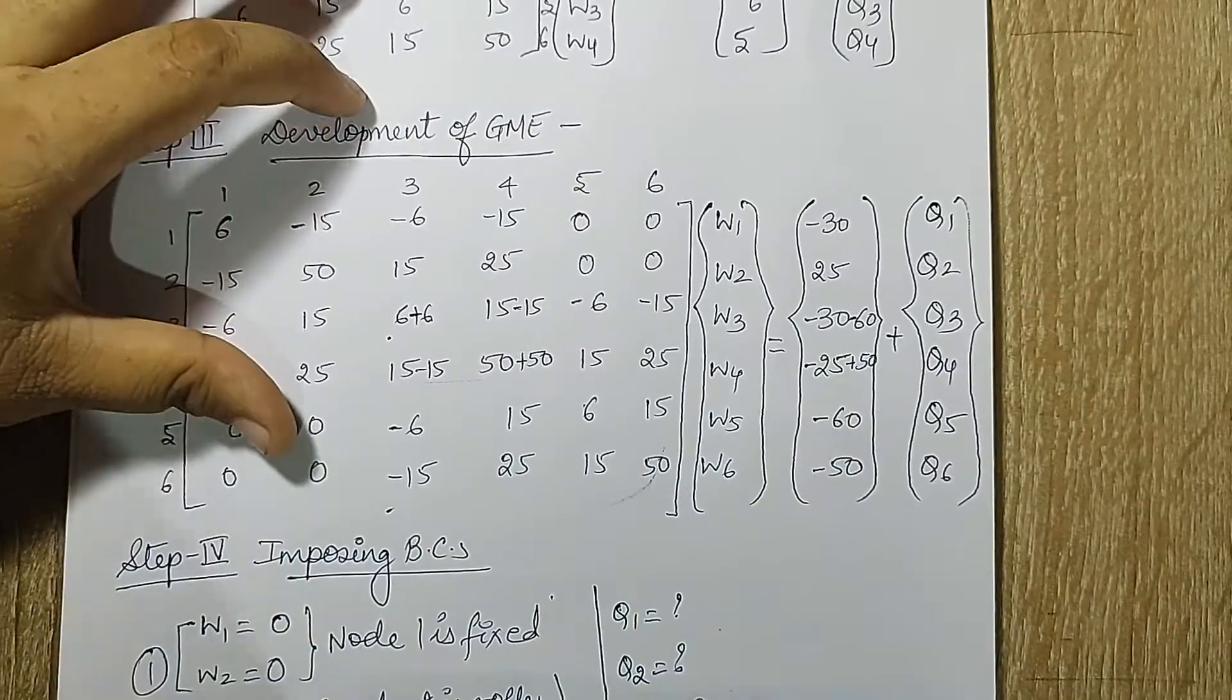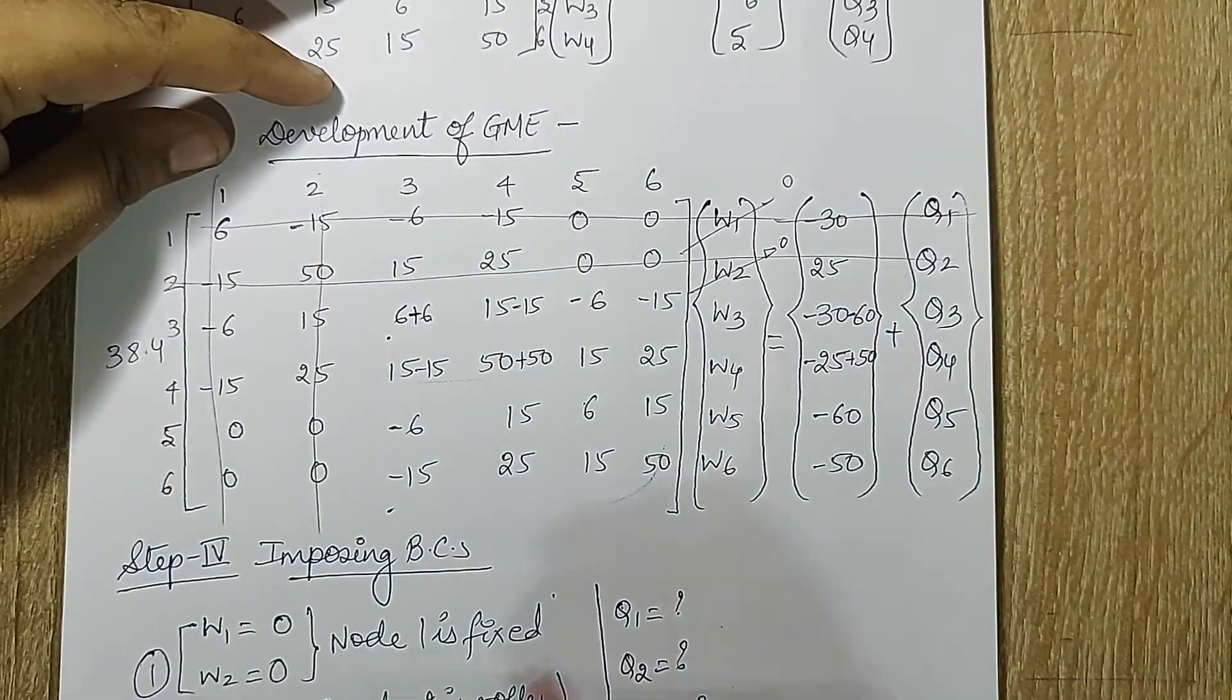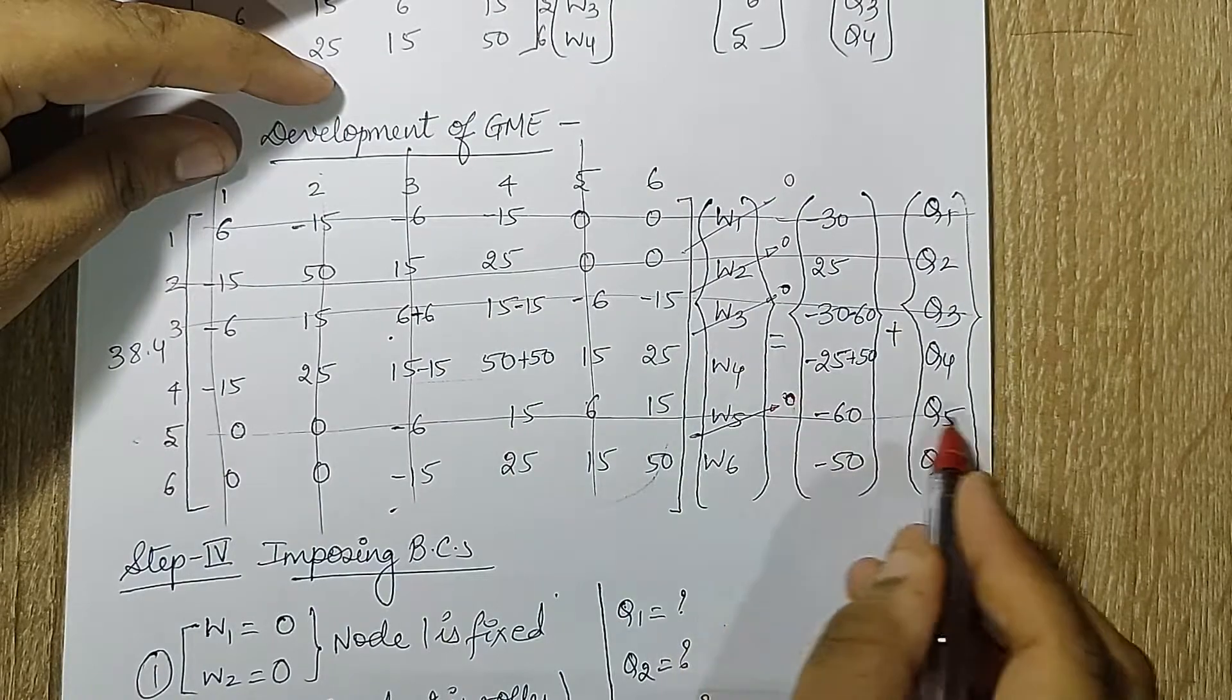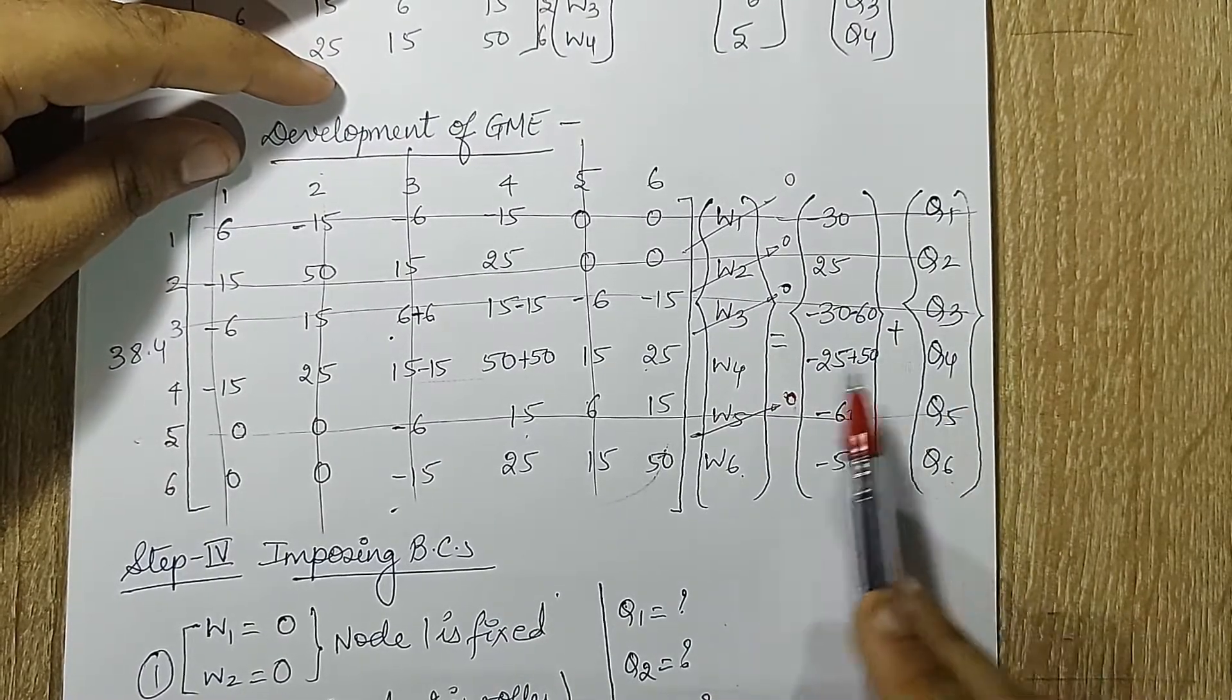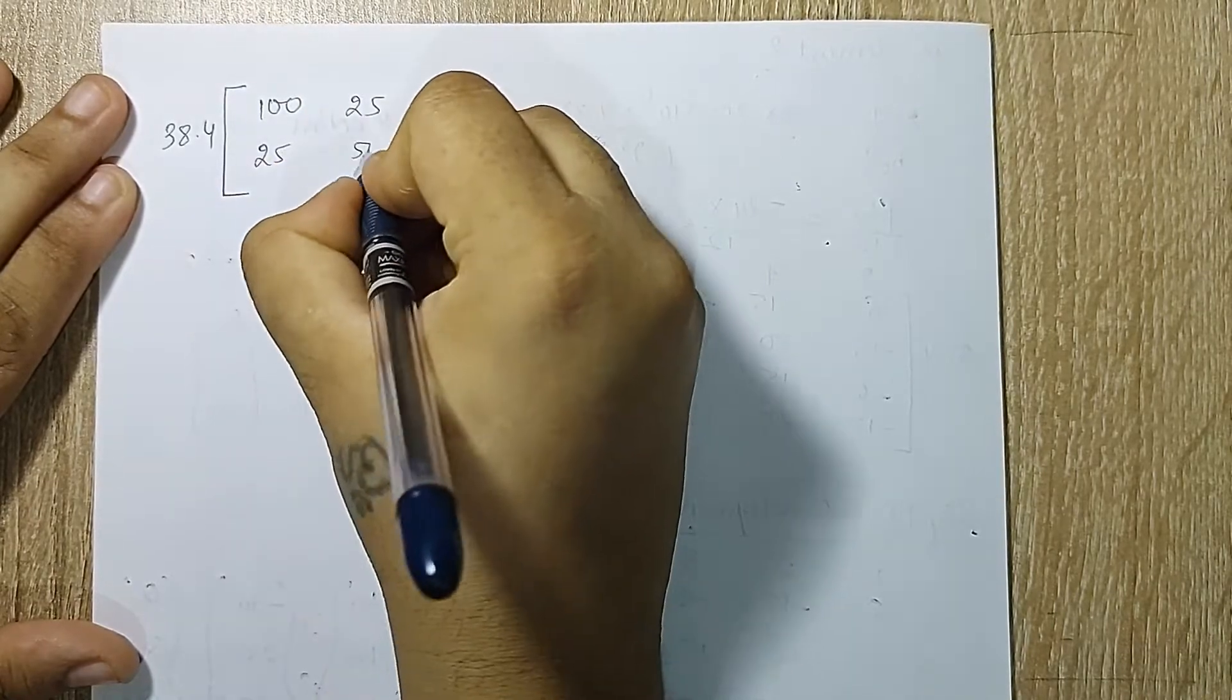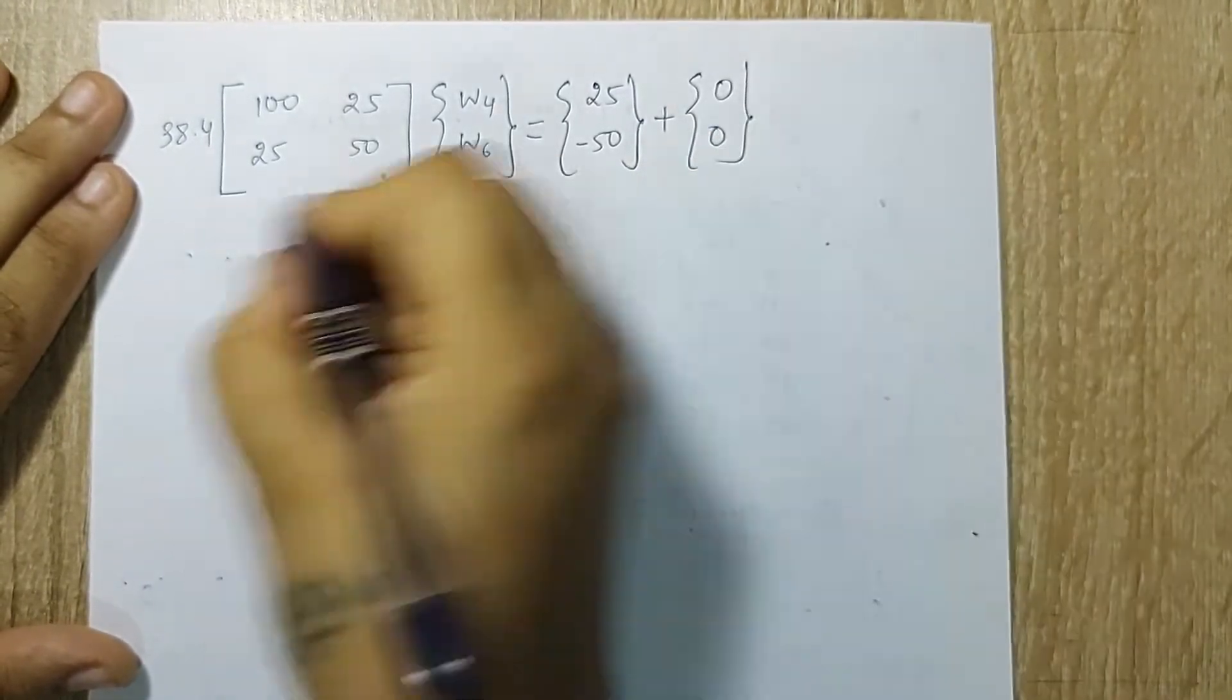Now I'm going to apply the conditions here. My W1 is 0. So I'll neglect first row first column for some time. W2 is 0. So again neglect the second row second column and W3 is 0. So neglect third row third column and I have W5 is 0. So fifth column and fifth row is cancelled out. So only four elements remain. I have to calculate W4 and W6. Q4 and Q6 are 0. After finding W4 and W6 I'll find Q1, Q2, Q3 and Q5.